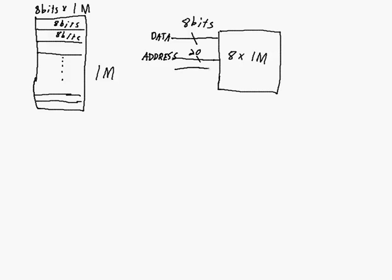We're also going to need a clock pulse, since this is going to be synchronous memory. And we're going to need signals to say whether we're reading or writing — a read signal and a write signal. We're just going to focus on the writing application for this video, so we'll focus on just the write signal. So from all these signals coming in, we're going to focus on the data, the clock, and the write signal.